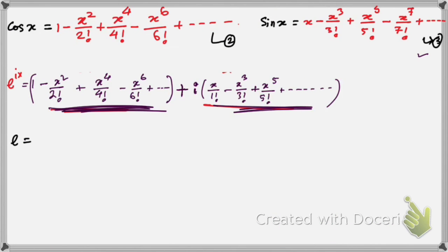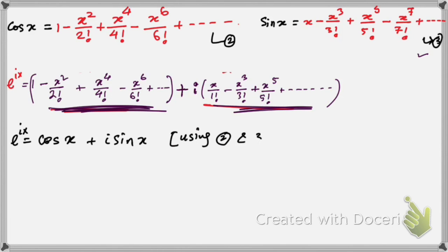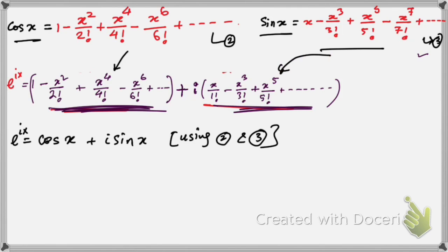So we can say: e to the power ix is equal to cos x plus i sin x, using equations 2 and 3. This is proved — this is Euler's formula.